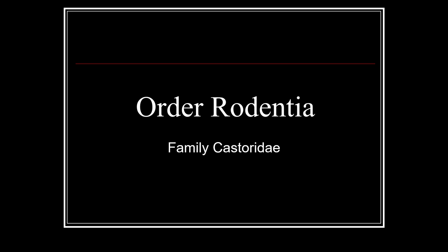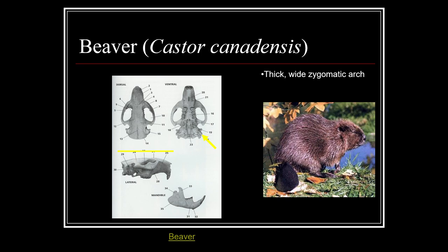Next is Family Castoridae. Within this family we have our beaver, Castor canadensis — another skull you'll need to know. That thick, wide zygomatic arch is a really key feature to identify this species. They also have that broad flat tail with no fur on it, so it's another pretty easy species to identify.